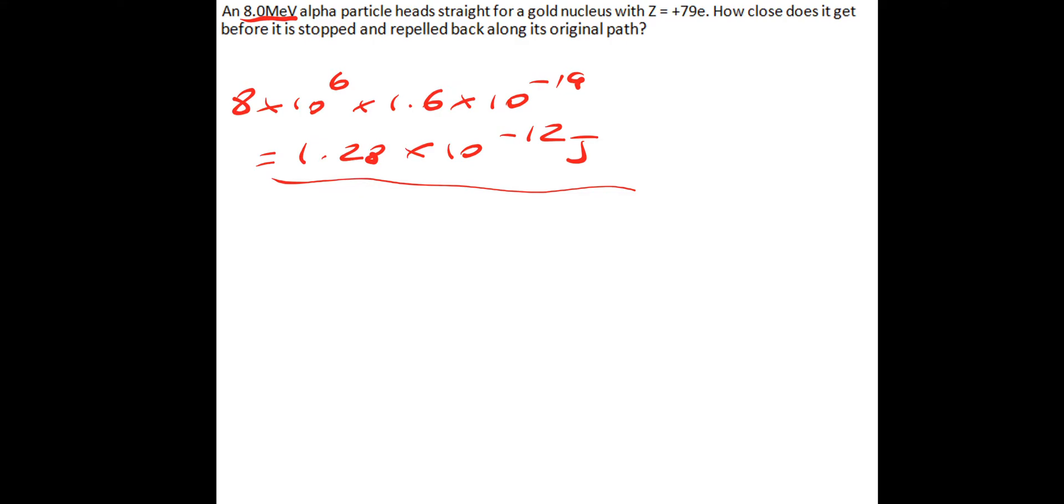Now in terms of what's happening, we've got some work being done against the electrostatic force. So we know that the work done is force times distance, or FR. And we also know that we've got an equation for the electrostatic force. So work done will be equal to, now remember the electrostatic force is K, Q1, Q2, over R squared.